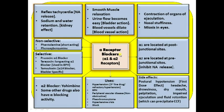If you block alpha receptors, smooth muscle relaxation occurs across the body. Two prominent effects are seen: first, the urinary bladder consists of a lot of smooth muscle, so urine flow becomes easier, especially in people suffering from benign prostatic hypertrophy where there is obstruction to urine flow due to enlargement of the prostate — one of the greatest uses of alpha blocking agents. Second, blood vessels dilate, causing a dip in blood pressure.